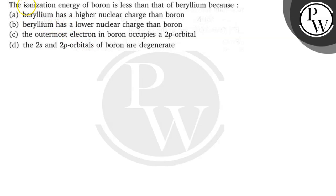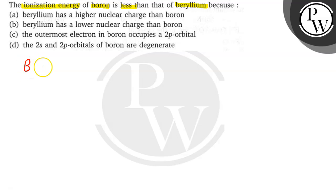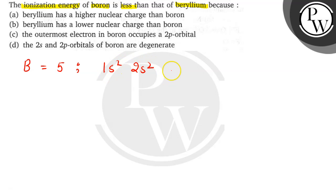Hello everyone, let's read the question. The ionization energy of boron is less than that of beryllium because... So if I write the electronic configuration of boron, that is atomic number 5, then it is 1s2, 2s2 and 2p1.